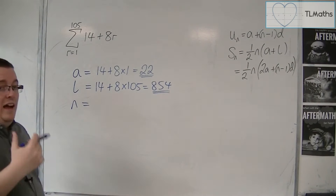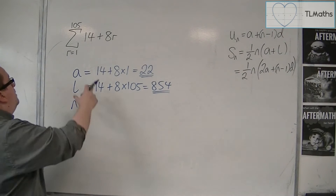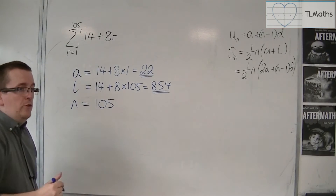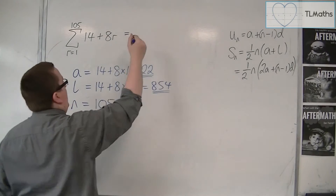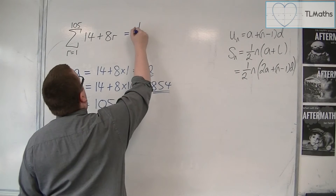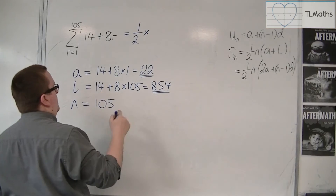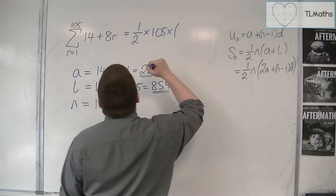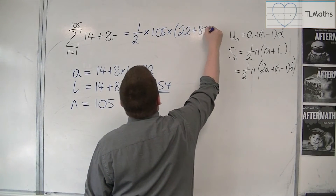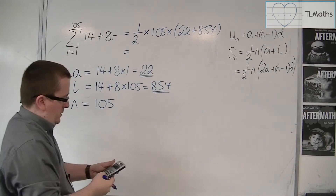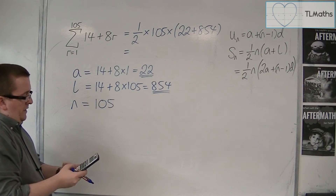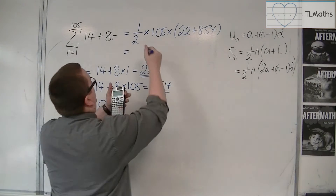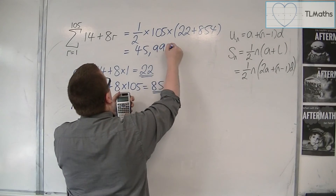N is how many terms there are in the series. We're going from R=1 up to 105, so there must be 105 terms. We can now use the middle formula: one half times N (105) times A plus L — so 22 plus 854. That gives us one half times 105 times 876, which equals 45,990.